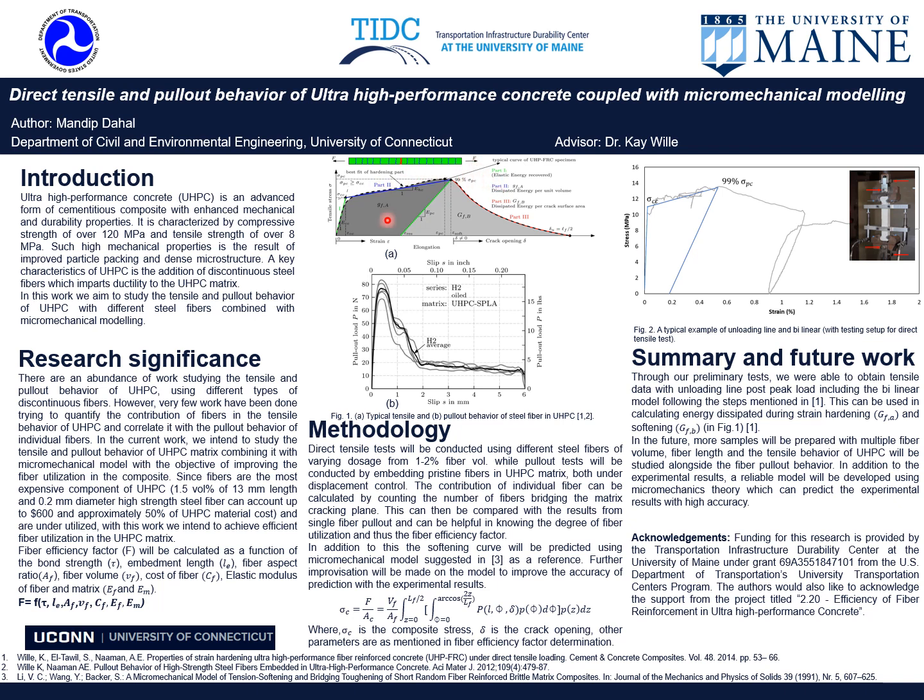Regarding the research significance, there has been a lot of work studying the tensile and the single fiber pullout behavior in UHPC matrix with different steel fibers. However, there are very few works that try to quantify the contribution of fiber in the tensile behavior and correlate that with the pullout behavior of the fiber. This is of particular importance because it can lead to efficient fiber utilization and ultimately cost-efficient UHPC.